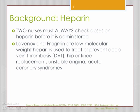There is a low molecular weight heparin called Lovenox, and it is used to treat or prevent deep vein thrombosis (DVTs), usually resulting from hip or knee replacement, unstable chest pain, angina, or acute coronary syndromes.